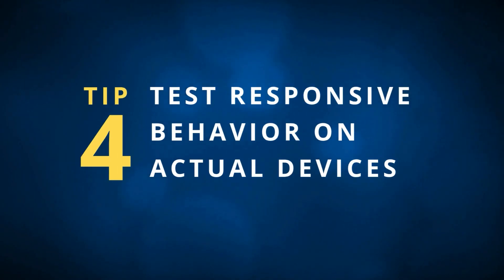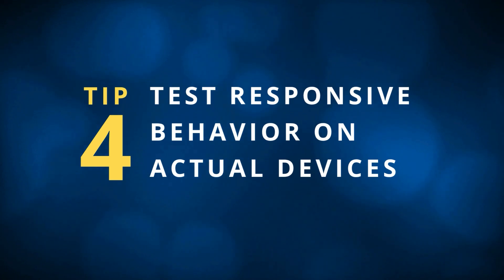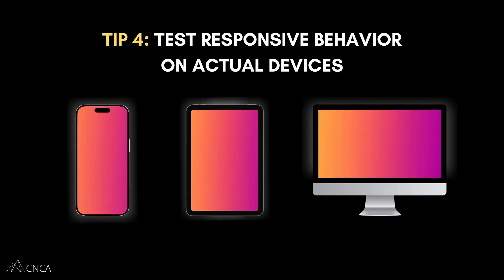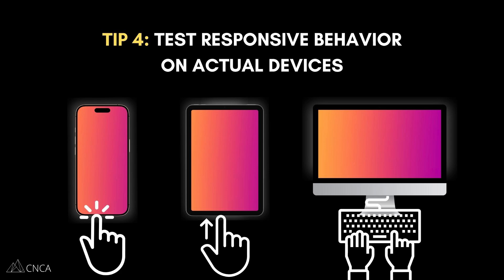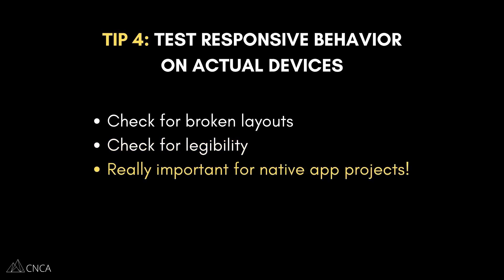Tip number four: test responsive behavior on actual devices. The responsive editor is helpful, but it's not a perfect stand-in for real-world use. So you need to open your app on a small phone, a tablet, a large desktop monitor, and actually use it — tap, scroll, type, swipe. You want to see if any buttons are getting cut off, if repeating groups are too wide, if the text is too small to read. These are common places where responsive issues show up that can look fine in the editor. This is especially important if you're building a native mobile app on Bubble — you actually want to use your app on a mobile device. Simulators on your desktop are never going to be the same as the real thing.